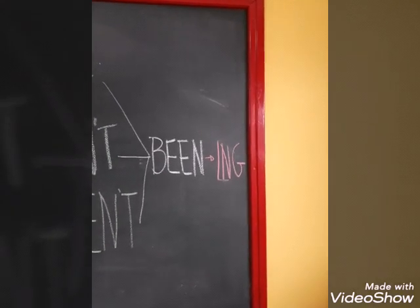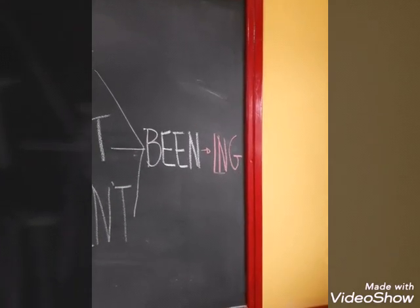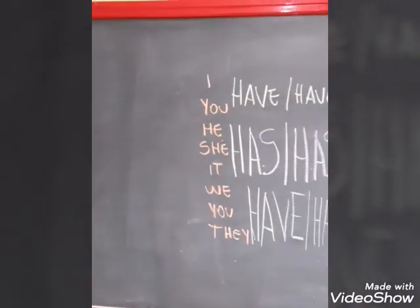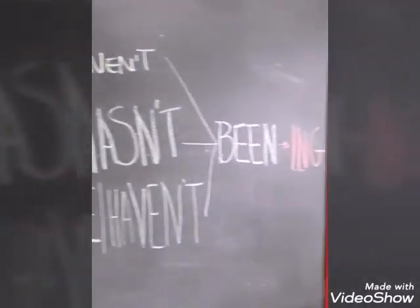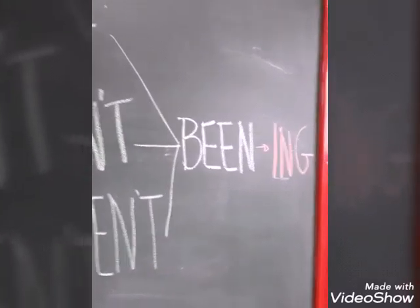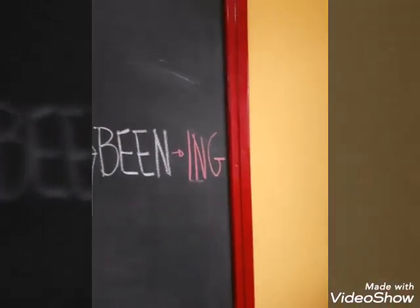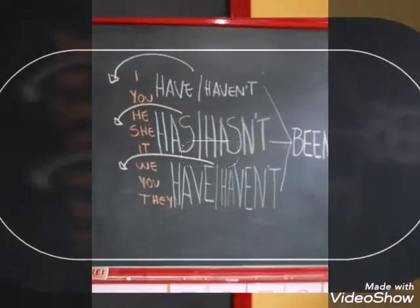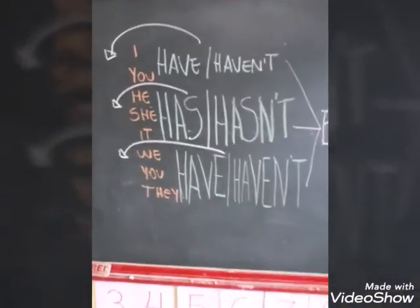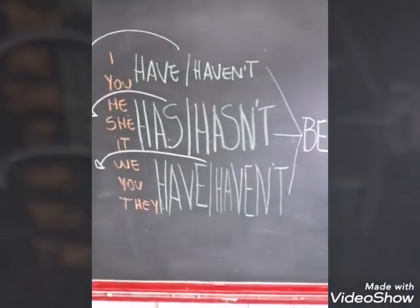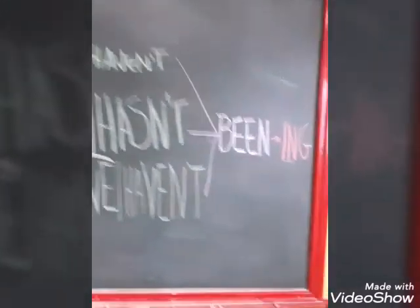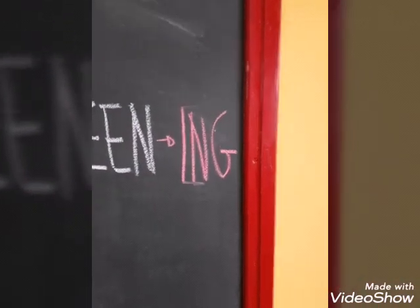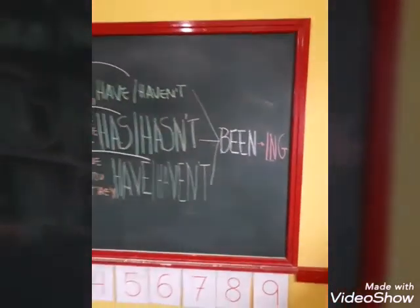Verbos no gerúndio em português terminam em -indo. Negativa: sujeito, haven't ou hasn't, mais o been, mais o -ing. Finalizando aqui, interrogativa: inicia o auxiliar have ou has, depois vem o sujeito, depois vem o been, depois vem o -ing. E o que não pode faltar? Ponto de interrogação.